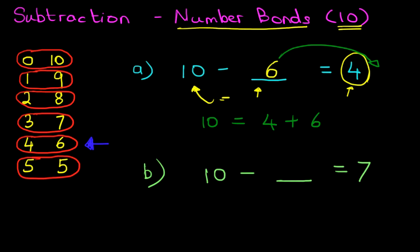Now, have a look at the number grid on the left. Can you find 7 anywhere? Well, we can. It's over here. And what number is next to 7? It is 3. 10 minus 3 equals 7.